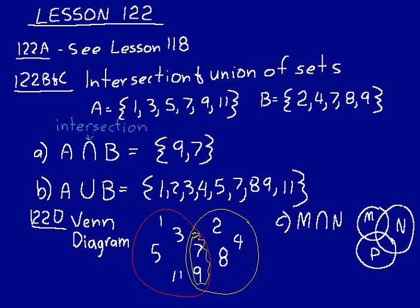That intersection, or that region that would represent M intersection N, would be the region in between or enclosed by both M and N. So it would be this region right here.